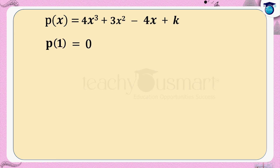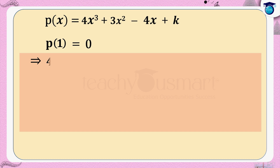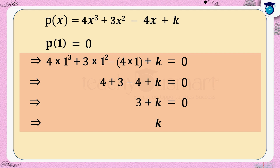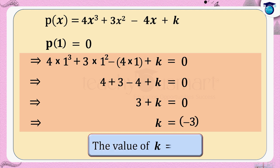By the factor theorem, p of 1 equals 0 implies that 4 multiplied by 1 cubed plus 3 multiplied by 1 squared minus 4 multiplied by 1 plus k equals 0, which implies 4 plus 3 minus 4 plus k equals 0, which implies k equals minus 3. Therefore, the value of k equals minus 3.